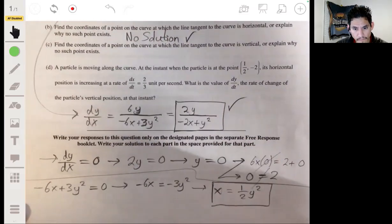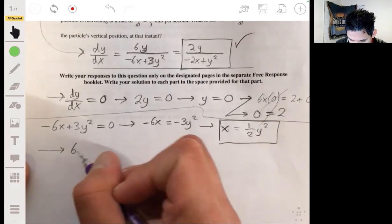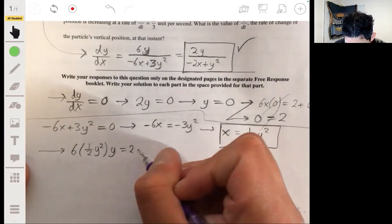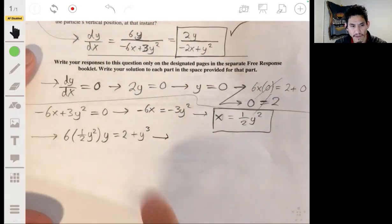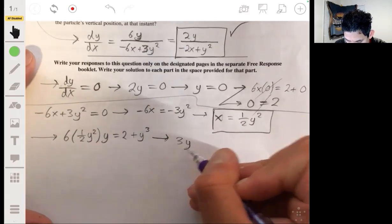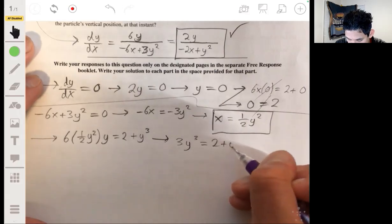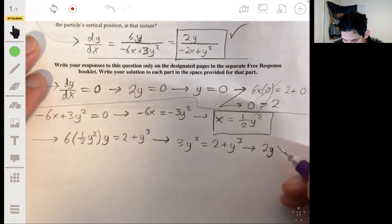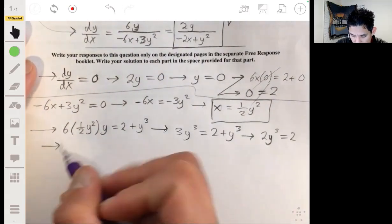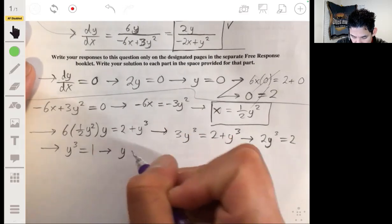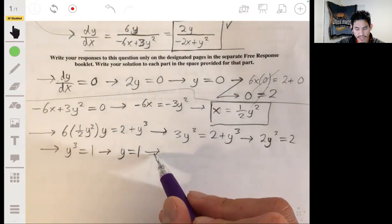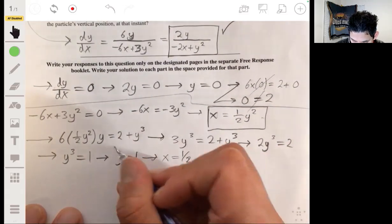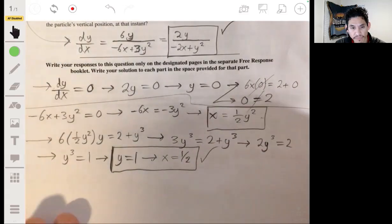And then we plug this expression or this equation into the original equation given here. Substitute that in for x. So then we get 6 times one-half y squared times y is equal to 2 plus y cubed. And we solve for the value of y. One-half of 6, you get 3y cubed on the left is equal to 2 plus y cubed. Take away y cubed from both sides, we get 2y cubed is equal to 2. And that means y cubed is equal to 1. And that means y will be equal to 1. So if y is equal to 1, plugging that back into here means x is one-half. And so this will be the coordinates of our point. That's part C.